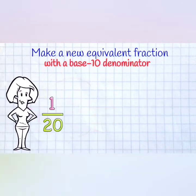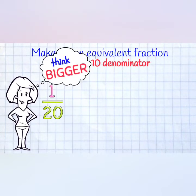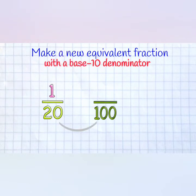Let's do another one: 1 twentieth. This time, we have to think bigger! Our denominator of 20 will turn into 100. To do that, we multiply by 5. Do the same to the numerator, and that gives us 5 hundredths.